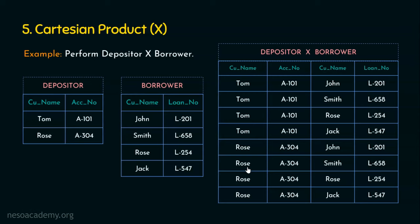Why do we need the Cartesian product? There are situations where we need it in order to fetch specific records. After doing the Cartesian product, we can apply a select condition to retrieve the appropriate records — for example, where customer name from depositor equals customer name from borrower. In this case, Rose is matching, so we can confirm that Rose, who has account number A304, may have availed loan L254. This is possible only when we do the Cartesian product.